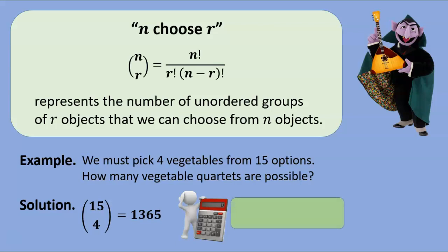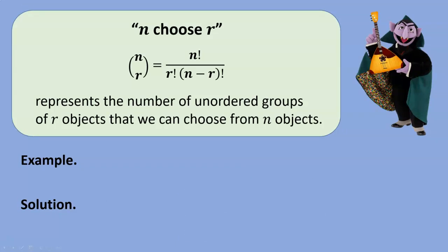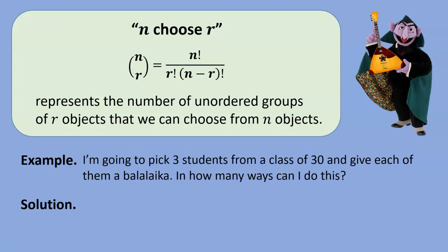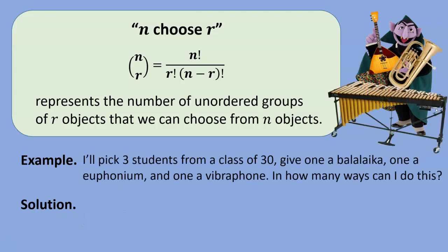A word to the wise: because most calculators write expressions on one line, they don't use the vertical symbol for n choose r. Your calculator's command will probably look something like nCr, used by placing it between n and r and pressing enter. For another example: I'm going to pick three students from a class of thirty and give each a balalaika. The order in which I pick them doesn't matter since everyone gets the same thing, so there are 30 choose 3 different trios — which is four thousand and sixty trios.